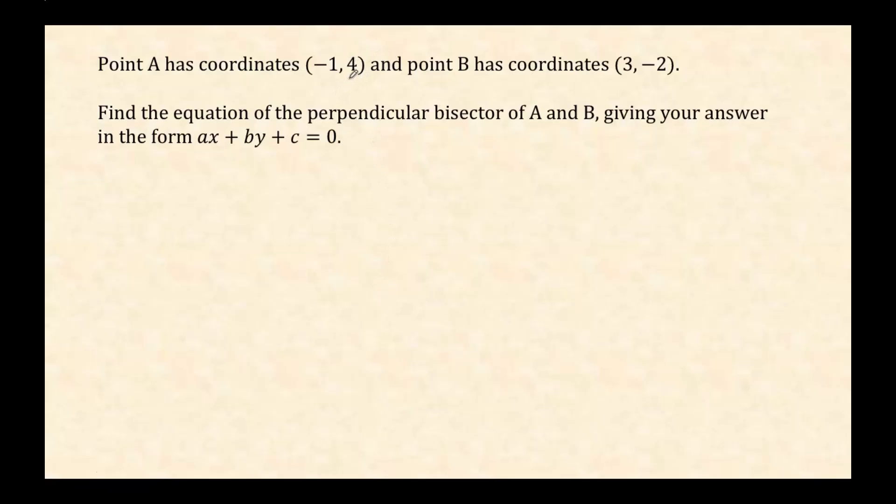Alright, so here's what's going on. We've got these two points A which has coordinates (-1, 4) and B which has coordinates (3, -2). We want to find the equation of the perpendicular bisector and give our answer in this form. Do not stress about this, we'll address that at the end. We'll just try to get any form we can at first.